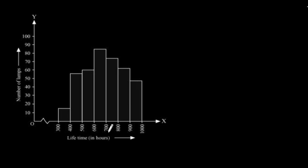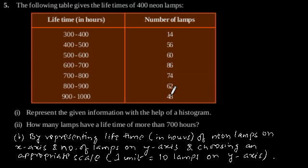Here, we can see the lifetime of a neon lamp is on x-axis, this one and number of lamps is on y-axis, and the scale is one unit is equal to 10 lamps on y-axis. So, this is our required histogram of the given information.